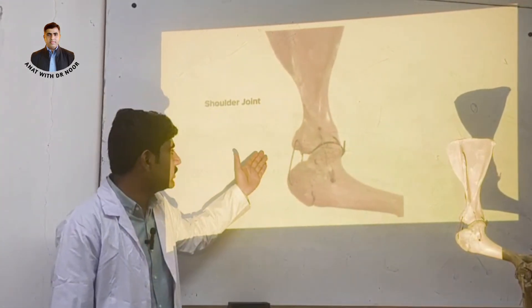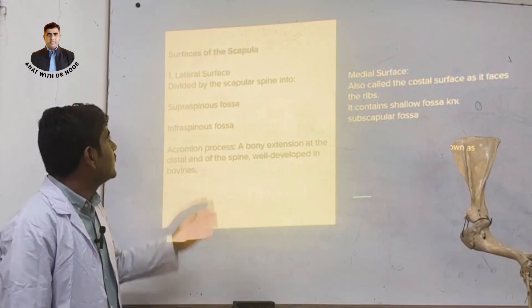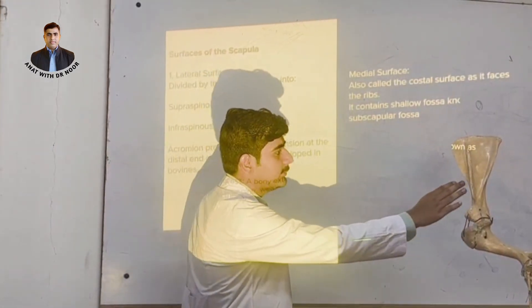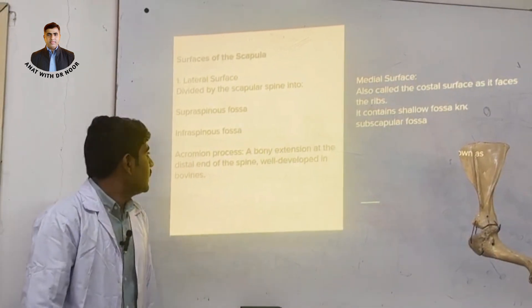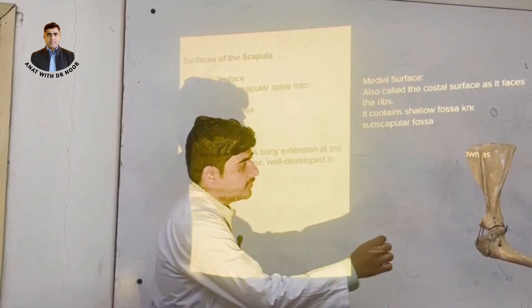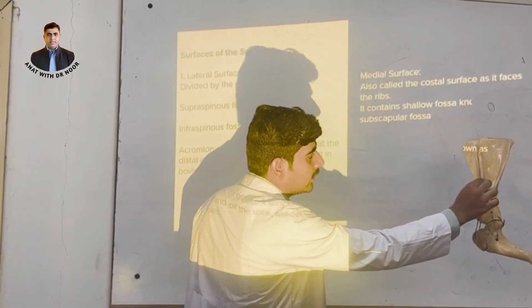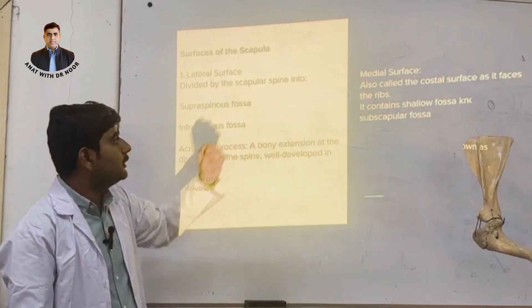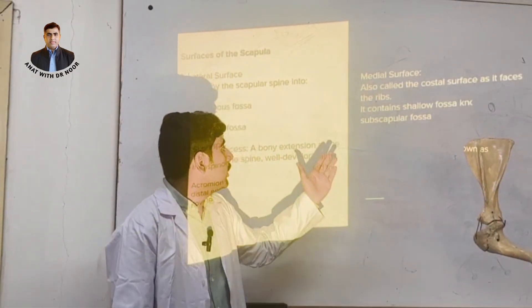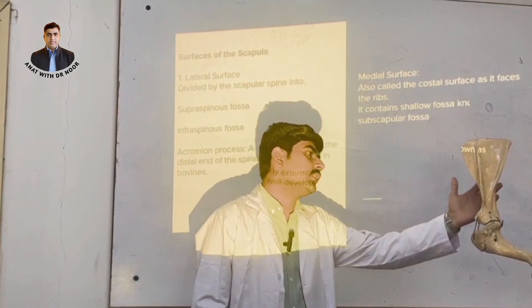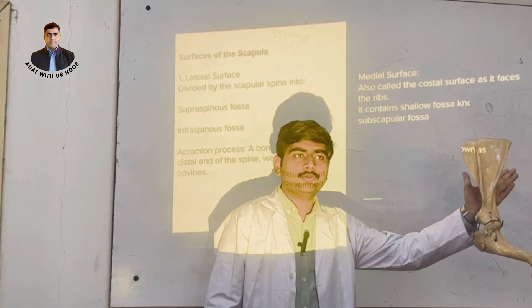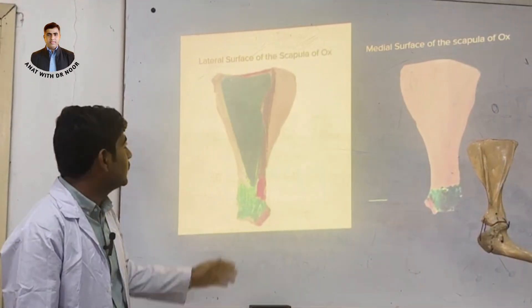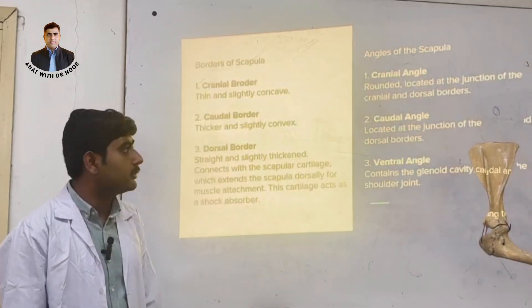This is the shoulder joint. There are two surfaces of the scapula: the lateral surface and the medial surface. The acromion process is a bony extension where the scapular spine ends. The medial surface, also known as the costal surface, faces the ribs and contains a shallow fossa known as the subscapular fossa.